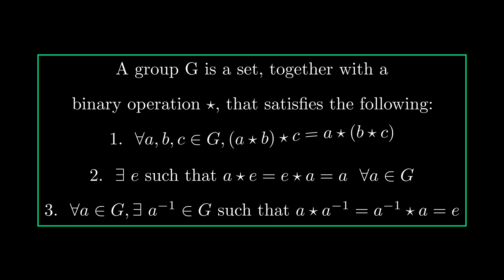For any three elements in the group, the binary operation is associative. An identity element exists. And for every element in the group, there exists an inverse element.